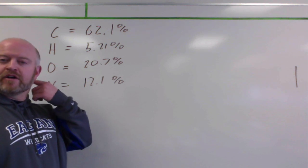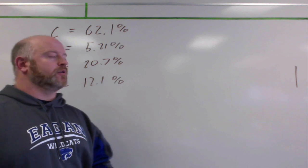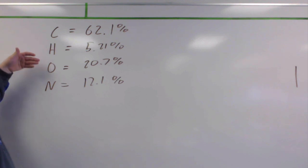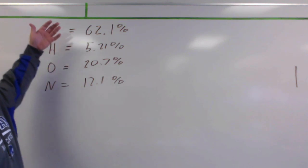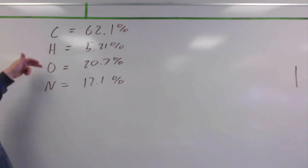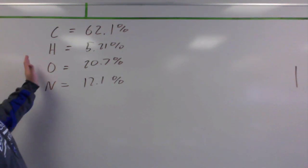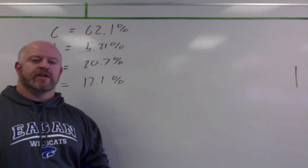Okay, let's assume we have a compound, and we have solved for the percent composition of that compound. So we know that that compound is 62% carbon, a little over 5% hydrogen, 20.7% oxygen, and about 12.1% nitrogen. So we have a molecule here, and we know it has carbon, hydrogen, oxygen, and nitrogen, but we don't know its empirical formula.